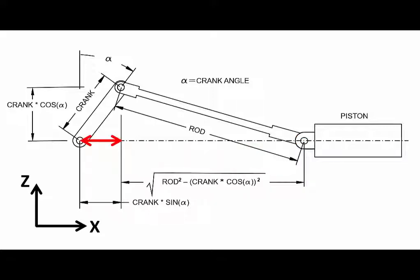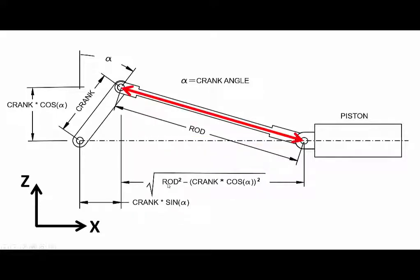We can do this by looking at two components. One is the distance attributed to the angle of the crank — that distance is crank times the sine of alpha, where alpha is the measurement from the vertical direction measured in a clockwise direction. It is clockwise because x is positive to the right, z is positive up, and y is going into the screen. So using the right-hand rule, the positive direction for alpha is clockwise as viewed from this orientation. The other component is the distance attributed to the horizontal component of the rod, expressed as the square root of rod squared minus the vertical component crank times the cosine of alpha.